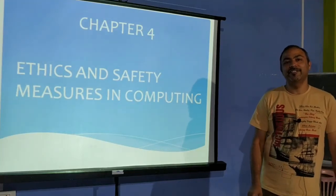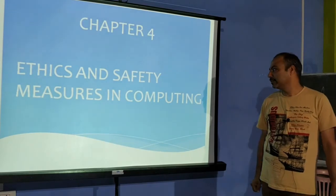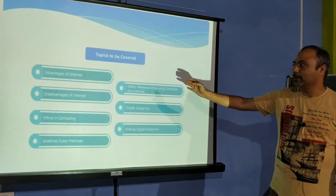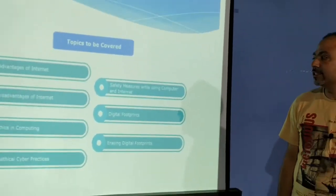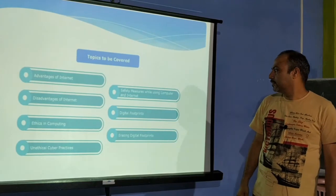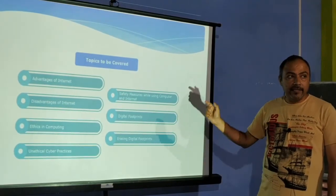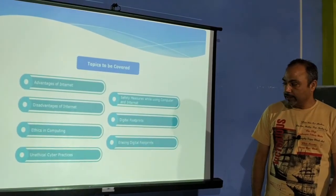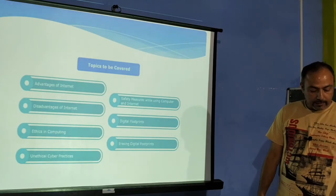Hello everyone, welcome to the interactive class on computers. Today we will be discussing Chapter 4, that is Ethics and Safety Measures in Computing. In this lesson we will be covering the internet, its advantages, its disadvantages, ethics in computing, unethical cyber practices, safety measures, digital footprint, and erasing the digital footprint. Today we will only be covering the advantages and disadvantages of using the internet and an introduction to ethics in computing.